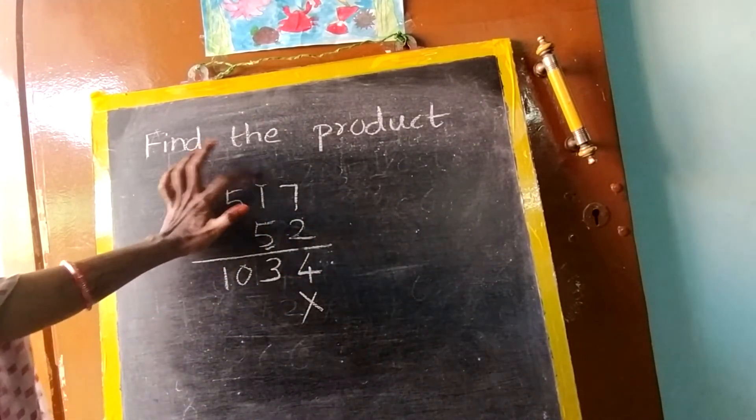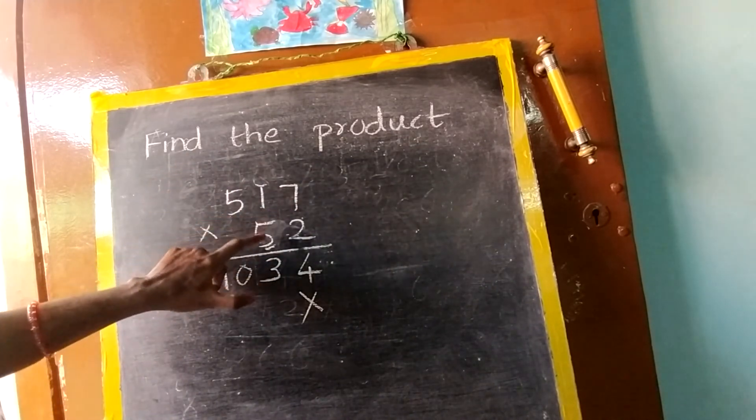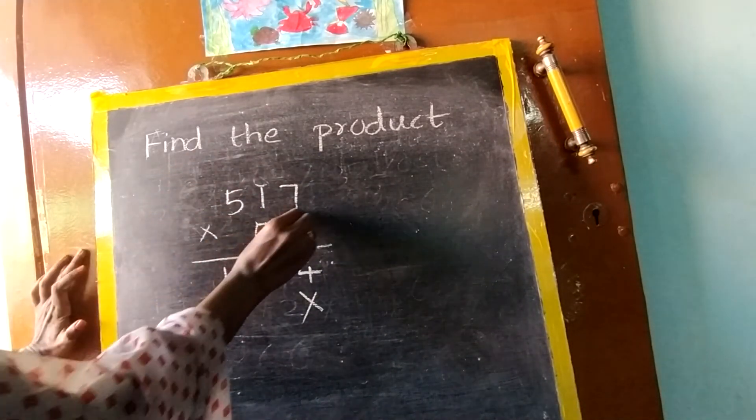Now 2 is over. Next is 5. 5 with 7, 5 with 1, 5 with 5. All the 3. This, this, this.